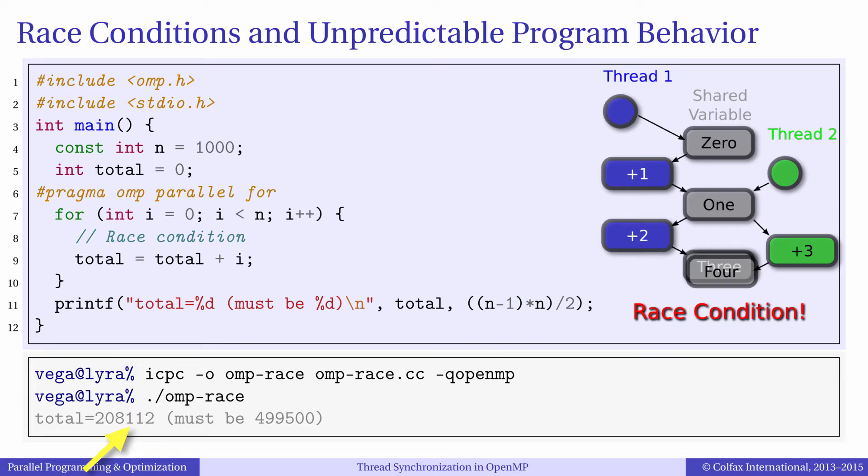When we compile and run this application the numerical result is just over 200,000. This is incorrect, the analytical expression predicts that the sum is just under 500,000.